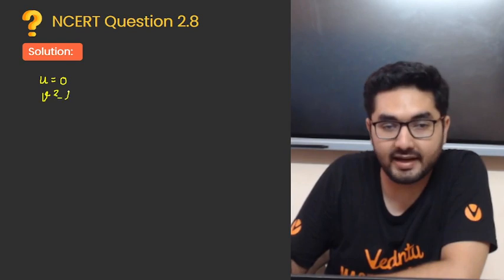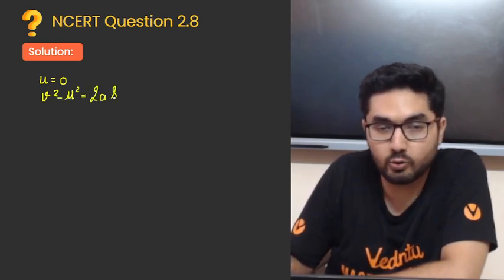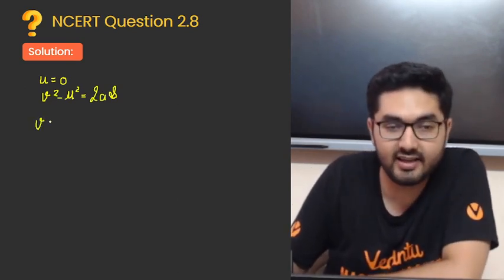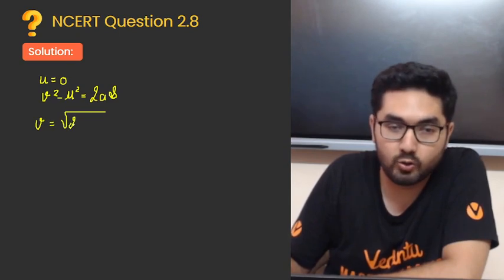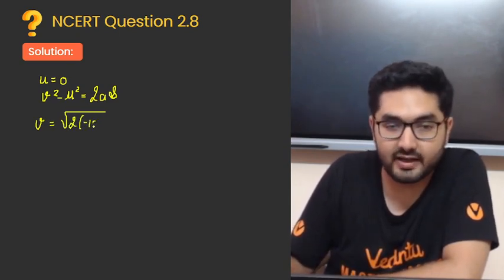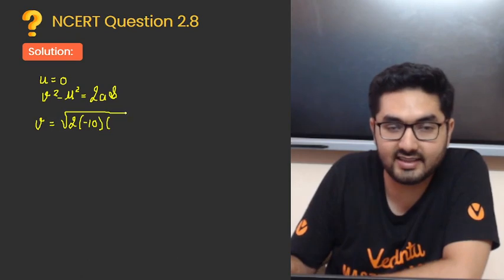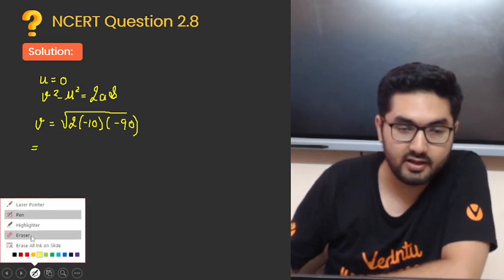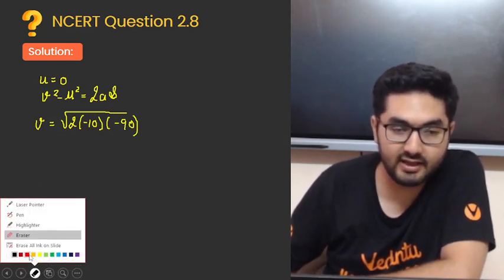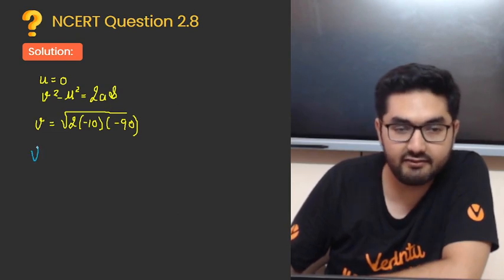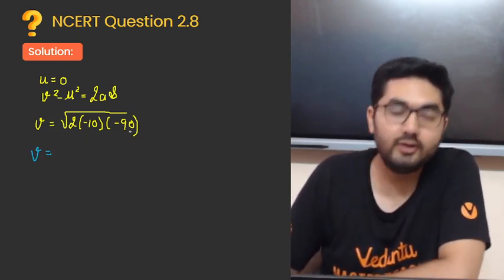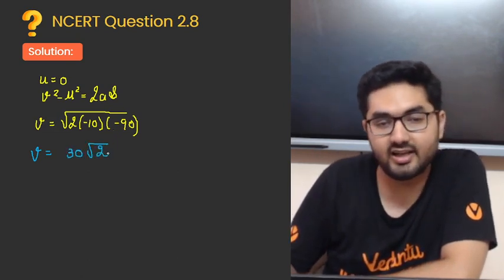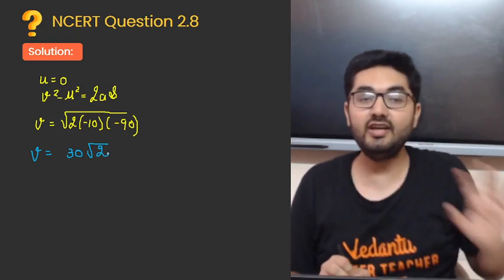Now v kaise nikal hoge? v squared minus u squared is equal to 2 into a into s. Yahan se v kitna nikal jayega? Under root of 2 into a ki jagah minus 10 le leta hoon, aur s kitna de rakhi aapko minus 90. Yahan se agar aap solve karoge, yahan se v ki value kitni aajayegi? Under root of 2 into 900. Ab isko 30 ko bahar lelenge, under root of, 30 under root 2. Yahan se aapki v ki value aajayegi.